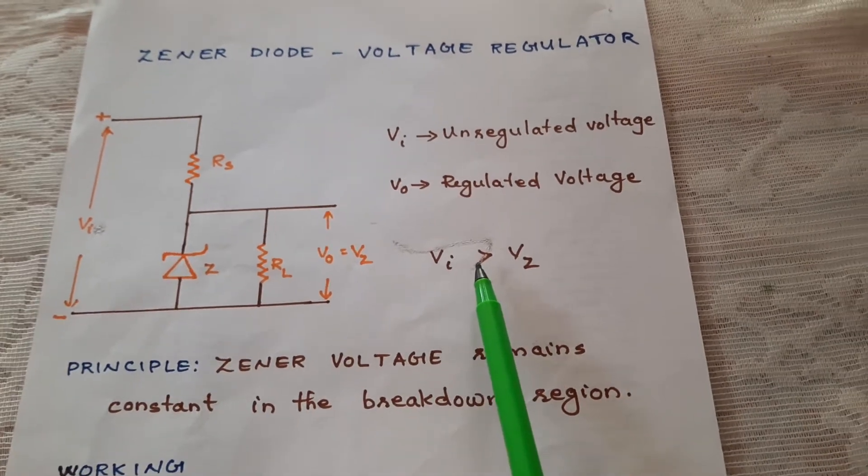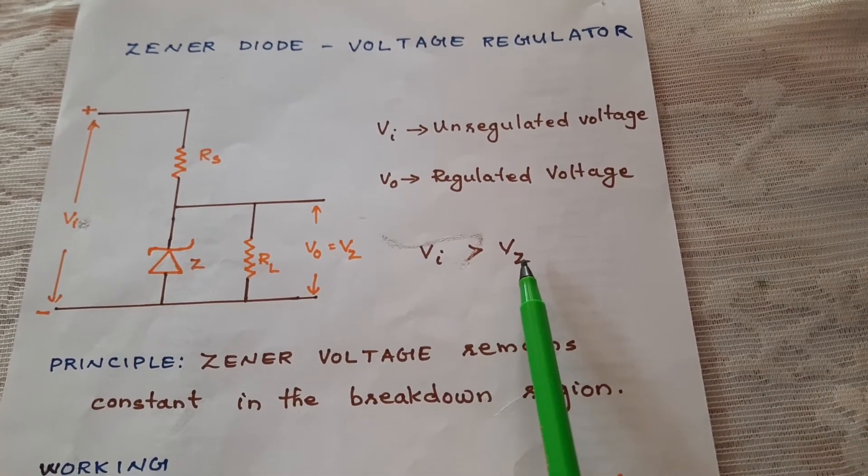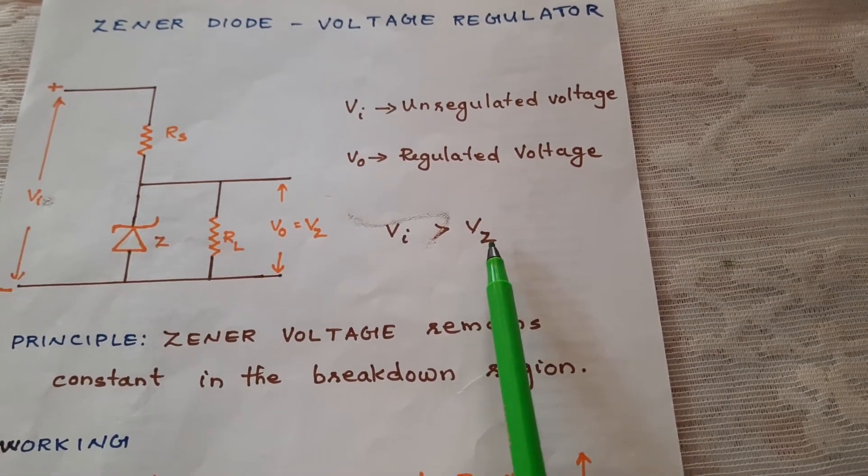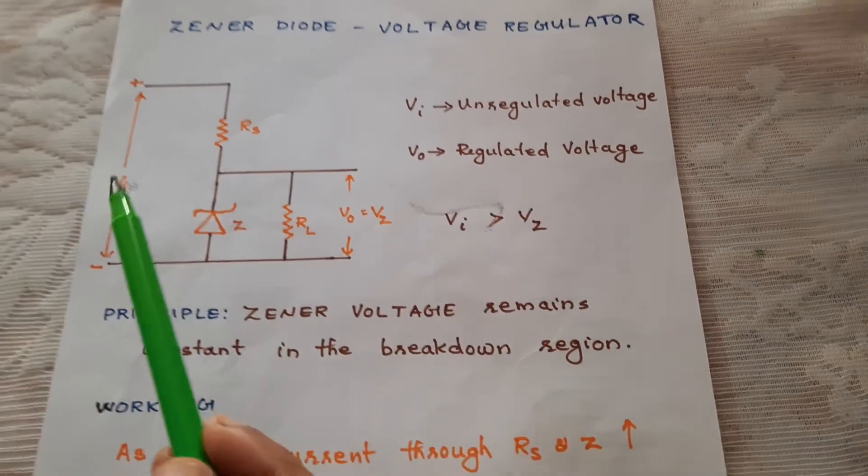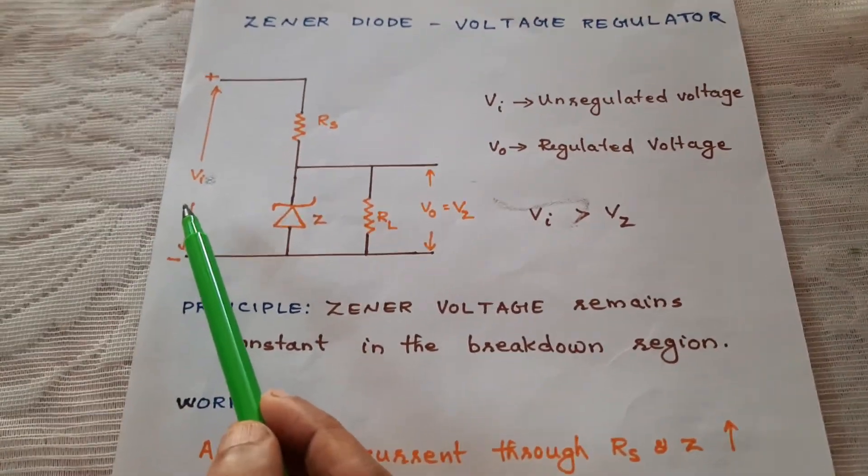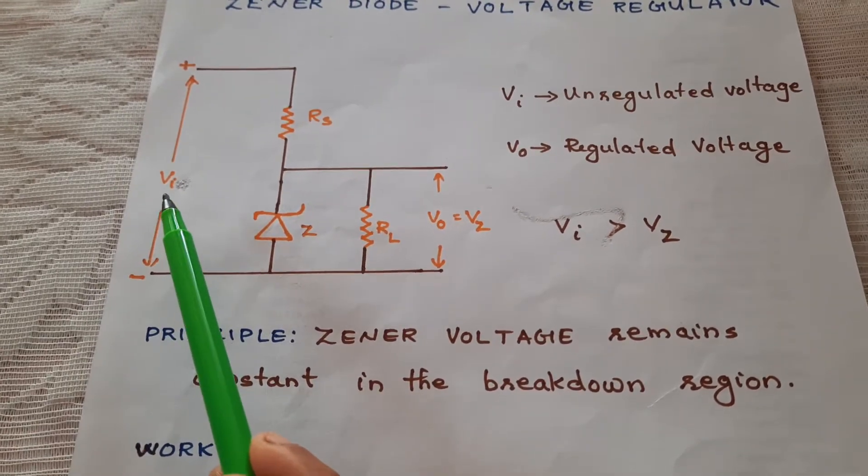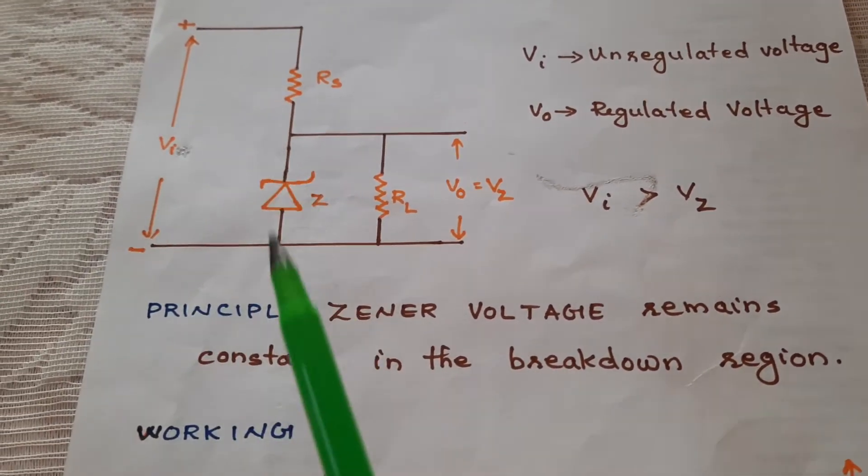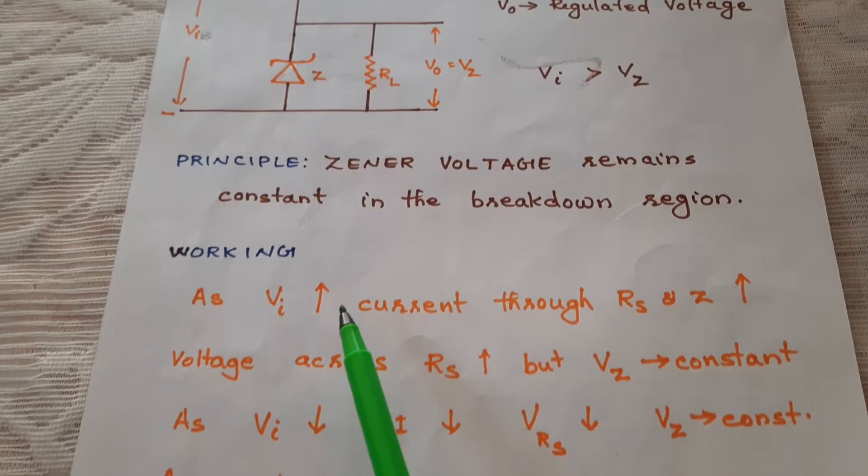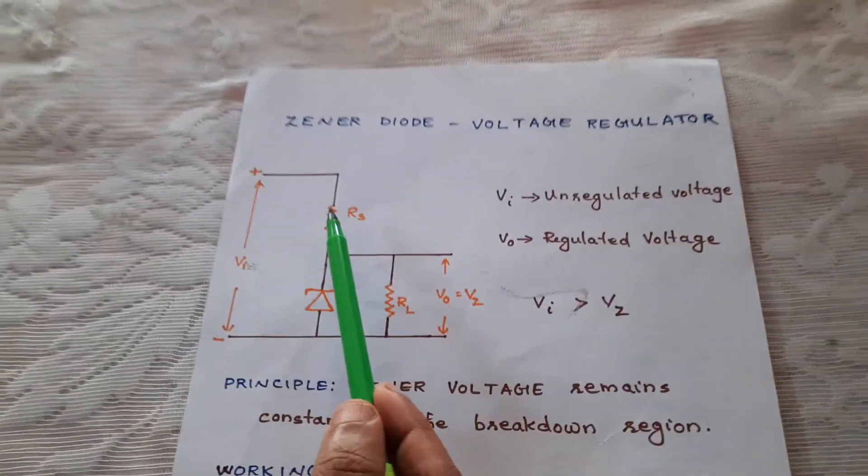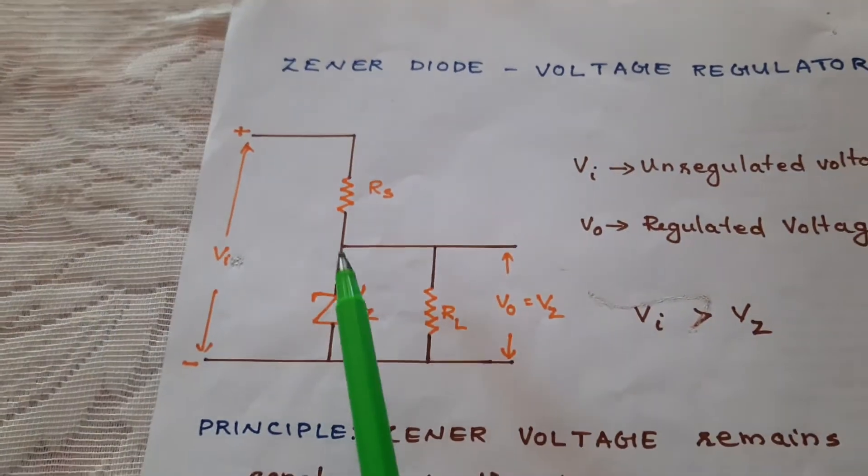The input voltage should be always greater than the breakdown voltage of the Zener or Zener voltage. When an unregulated voltage is applied, suppose the input voltage increases. As the input voltage increases, the current through RS and Zener increases.